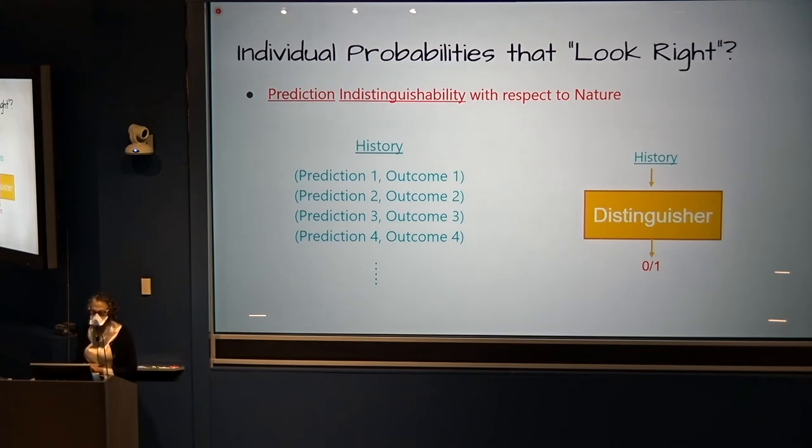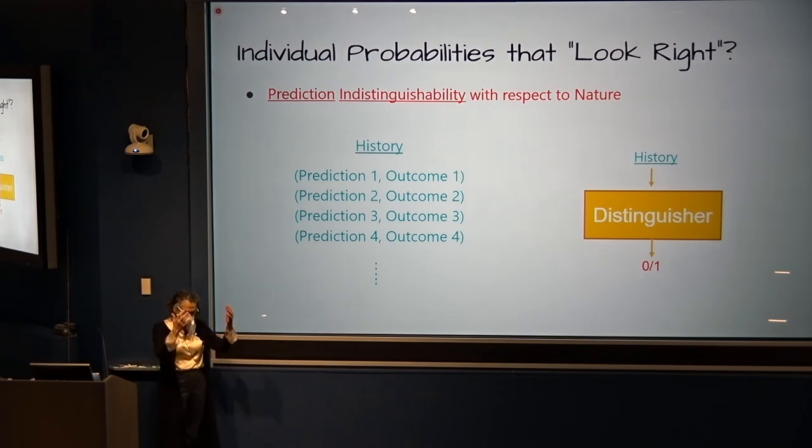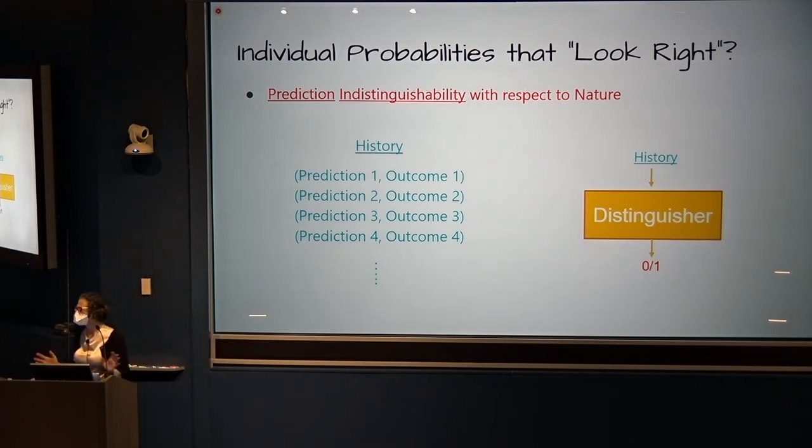Just as pseudorandom sequences look random to a given class of algorithms, we're seeking predictions that look right to a given class of algorithms. To understand this, we need a notion of a history or a transcript. And this is just a list of prediction and outcome pairs. Prediction probability and what actually happened. Prediction probability 2 and what actually happened. And so on and so forth. And we also need the notion of a distinguisher. That's a fancy word that takes as input an object that takes as input a history and just says 0 or 1. That's its entire functionality. Takes a history, says yes or no.